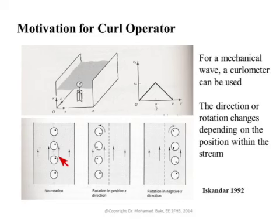There is no curl in this case because the curlometer does not see any difference in velocity to the right versus to the left. The black dot does not rotate.